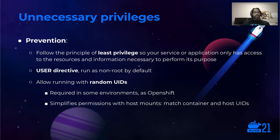In general, follow the principle of least privilege. Your service or application should have the minimal set of permissions to access the required resources and perform the required actions — nothing else. Avoid running containers as root unless strictly necessary. As a good practice, allow running as any UID, not a fixed one. This is required by some default security constraints like OpenShift, and it will also simplify permissions when you need to mount a host directory or share data between containers.